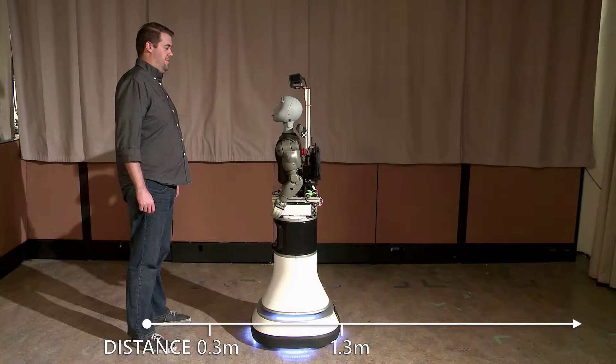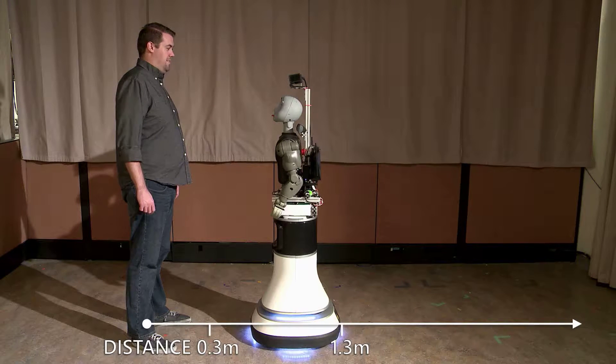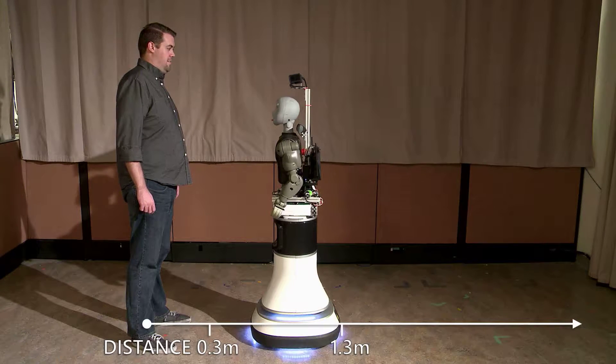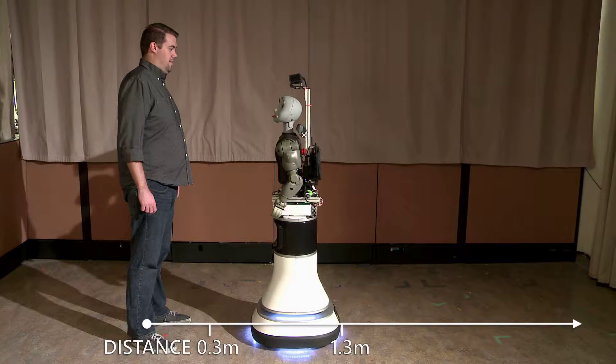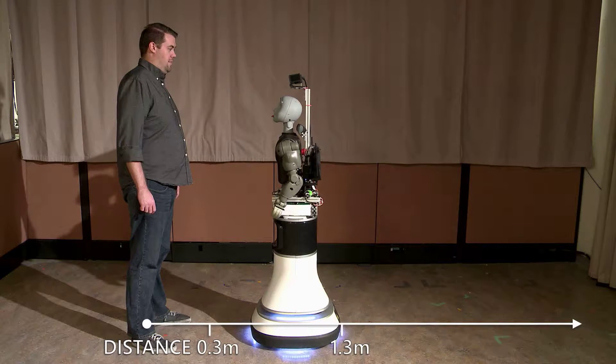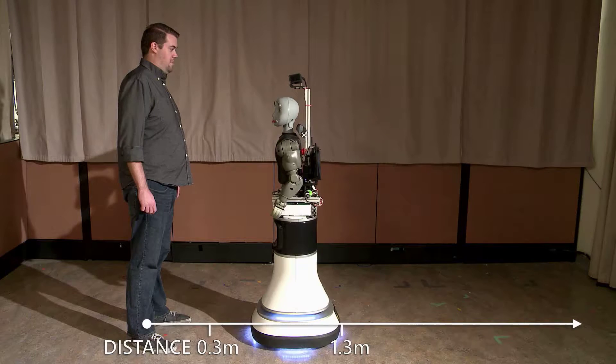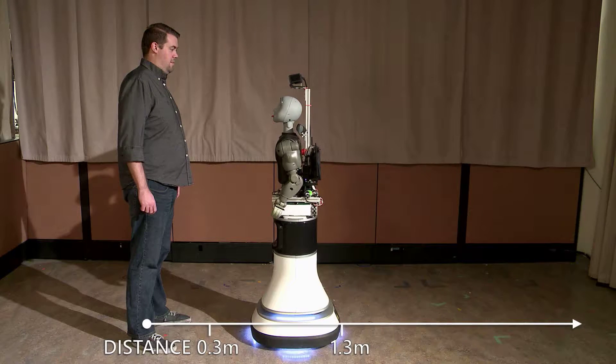At these ranges, the robot is able to automatically recognize human speech. However, the robot is unable to recognize human gestures because its cameras cannot see the entire upper body of the person. Thus, the robot often fails during an autonomous social interaction with a human user.